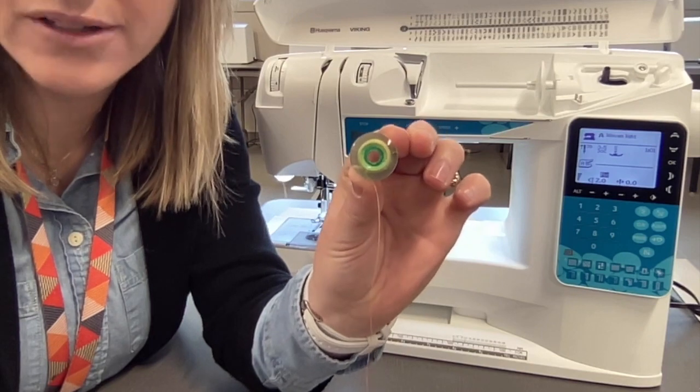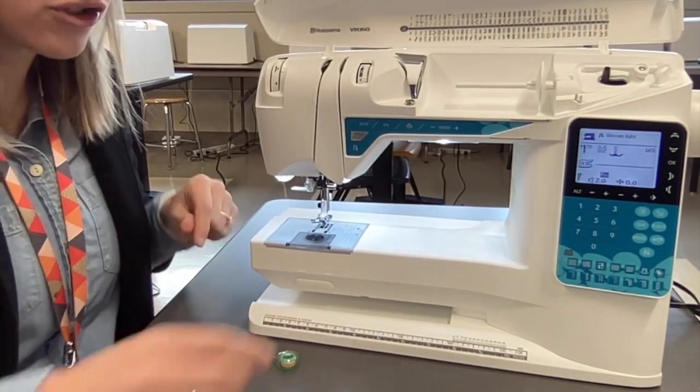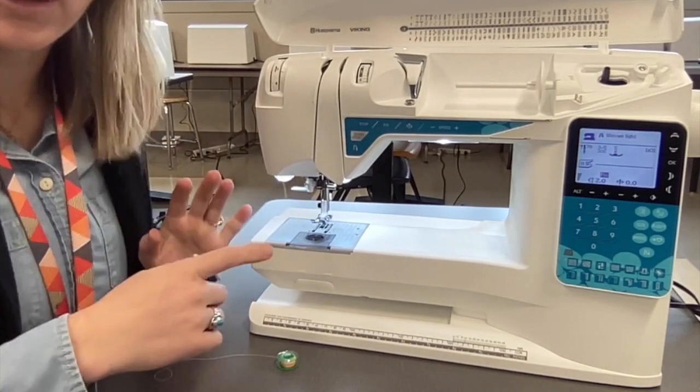Now this is what a bobbin looks like when it has thread on it. The point of the bobbin is that it creates a chain with your top thread using the sewing machine.